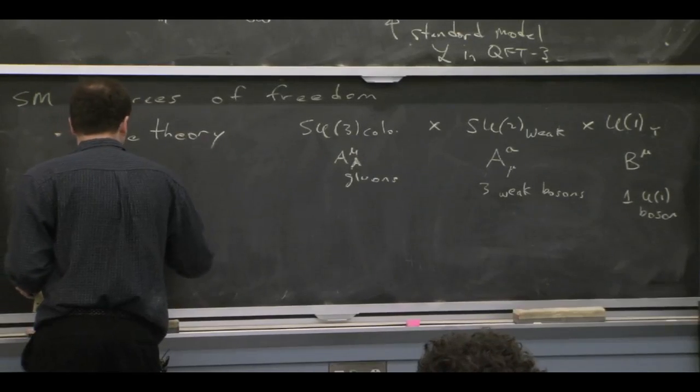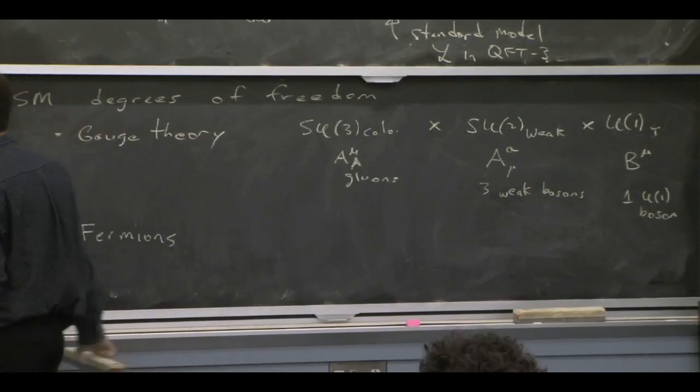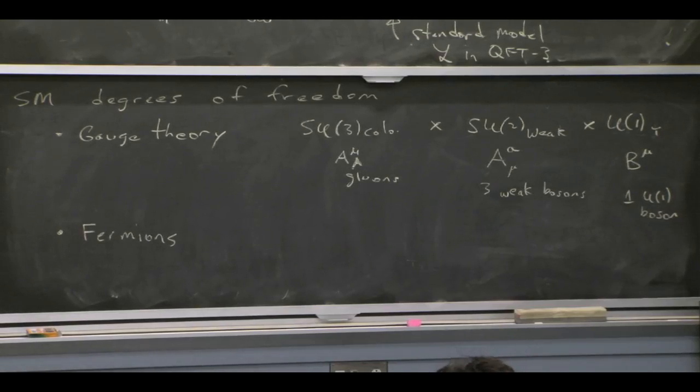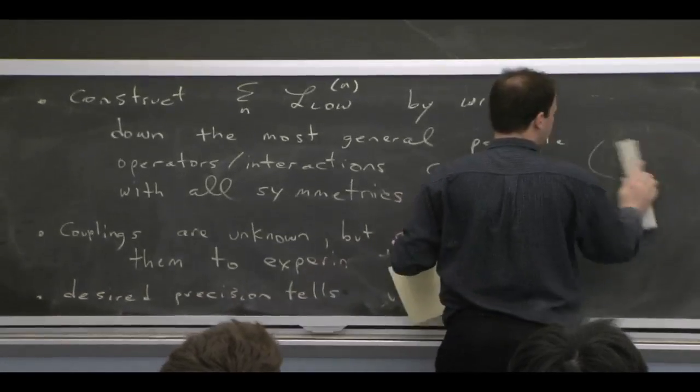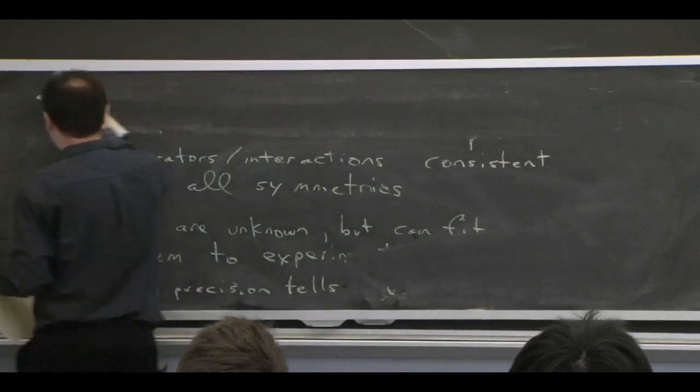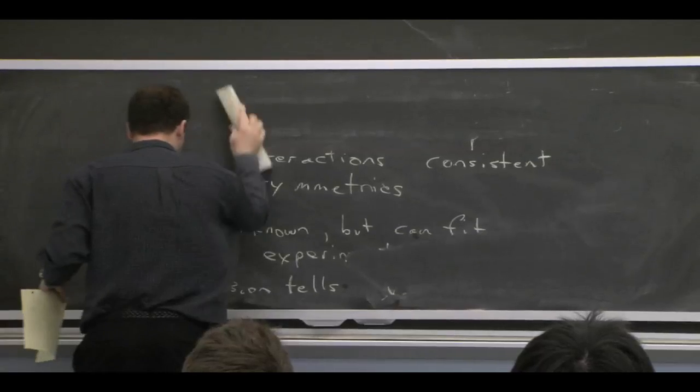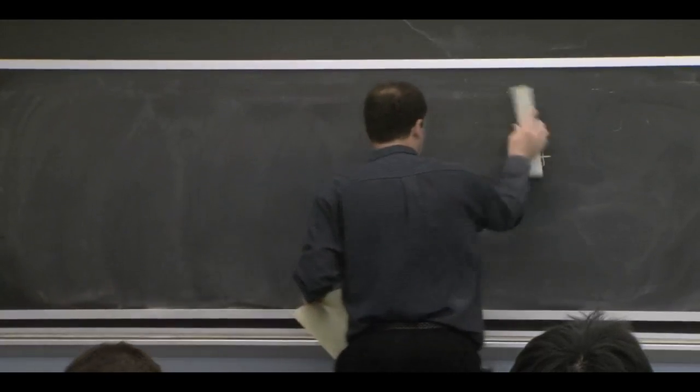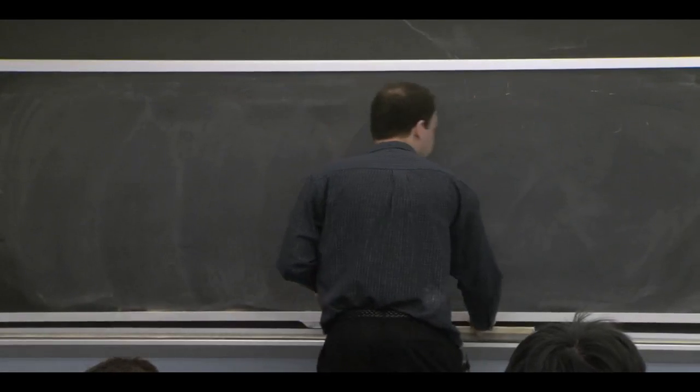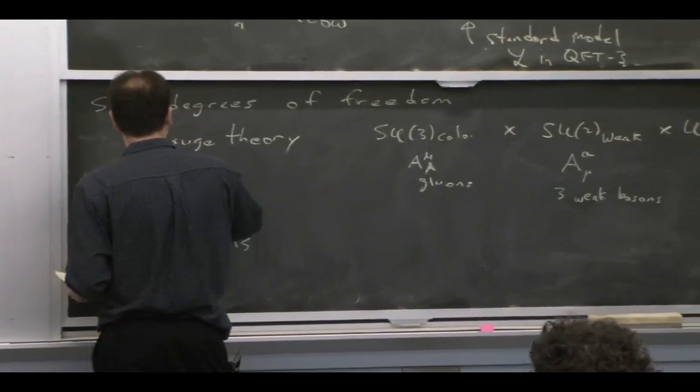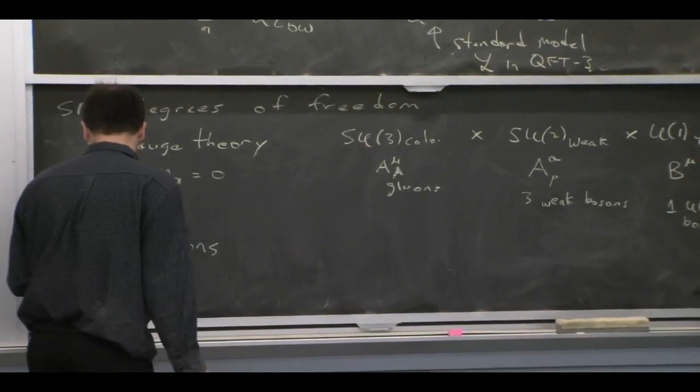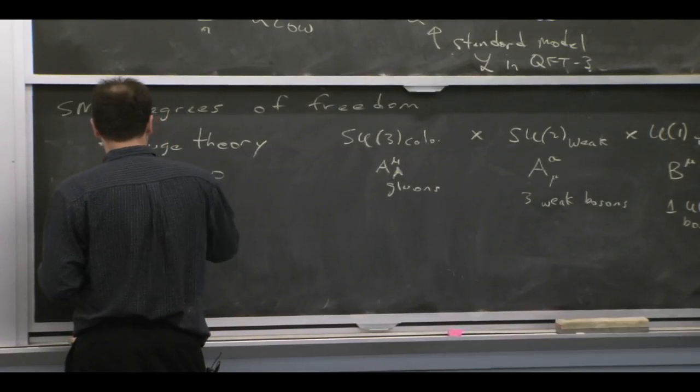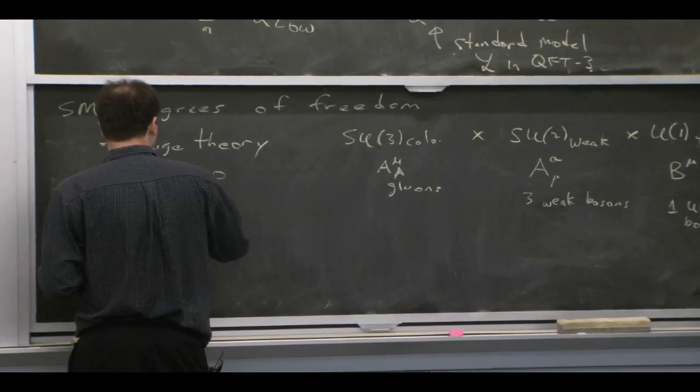We have fermions. Let me do the fermions over here. So an important thing in thinking about this as an effective field theory is to note what the mass scales are. So maybe I should do that already here. Photons are massless. That's one combination of the weak and U1 boson. Gluons are massless. That's these guys.